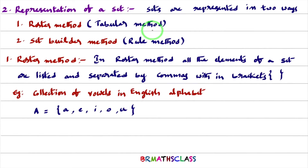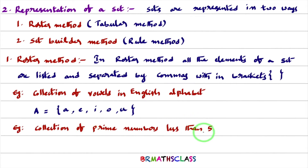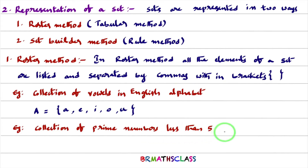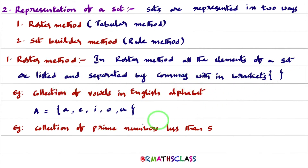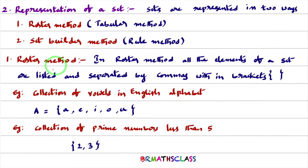Second example: collection of prime numbers less than 5. Prime numbers are well defined, and they clearly state less than 5, so this is a set. In roster method, we list all prime numbers less than 5, which are 2 and 3, separated by commas within brackets. So this set is represented as B = {2, 3} in roster form.